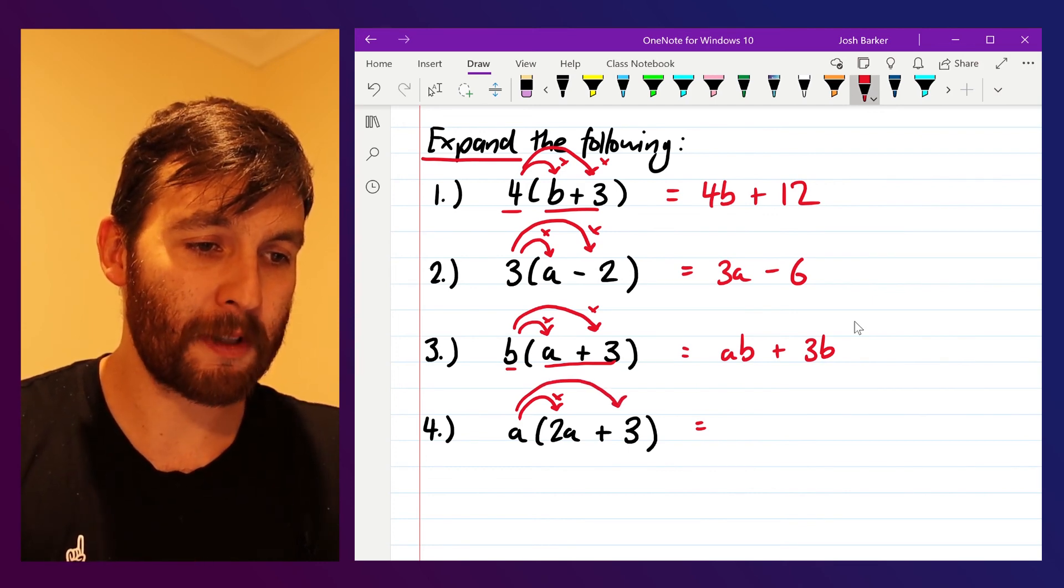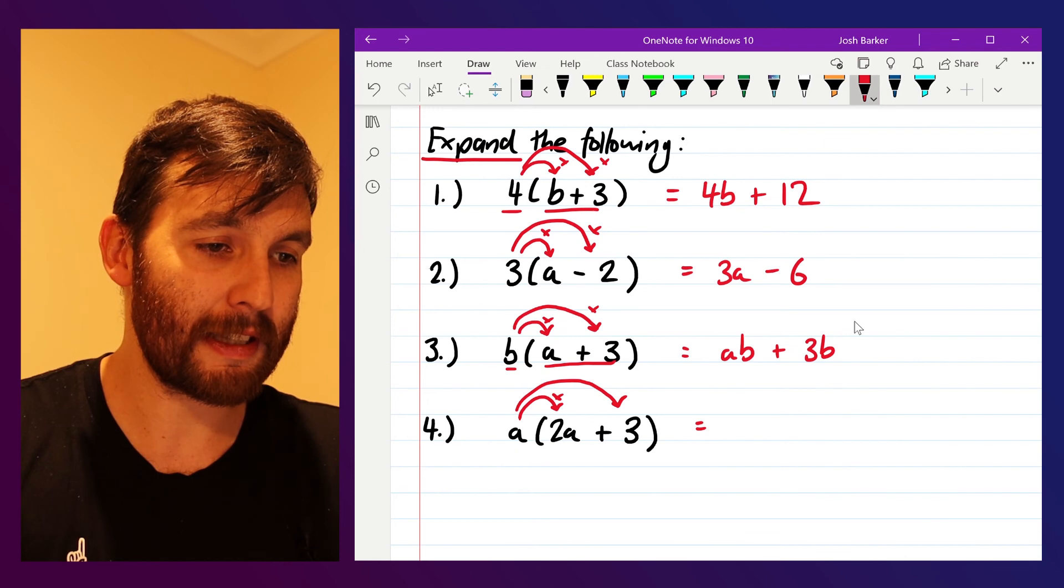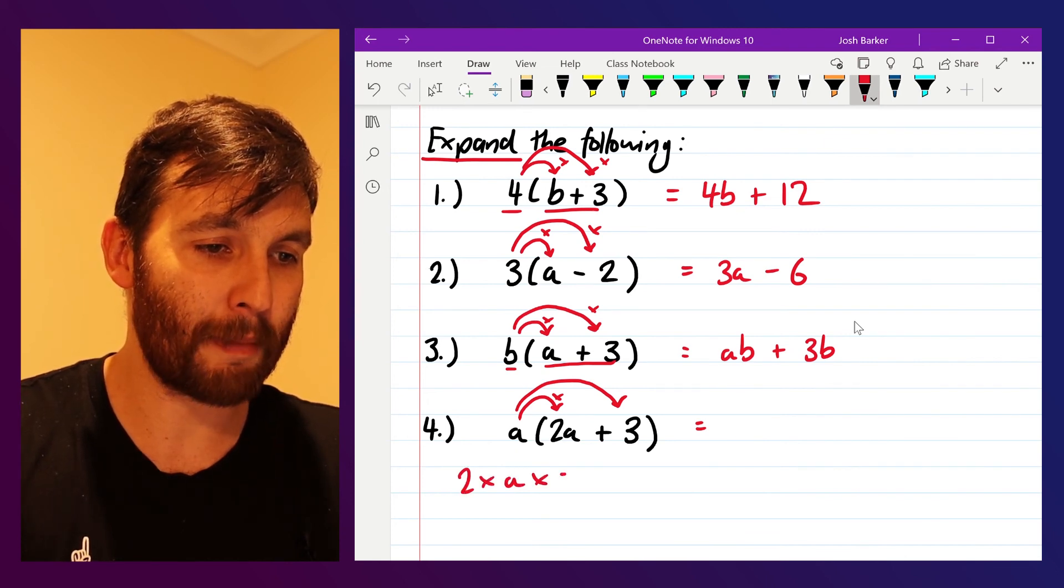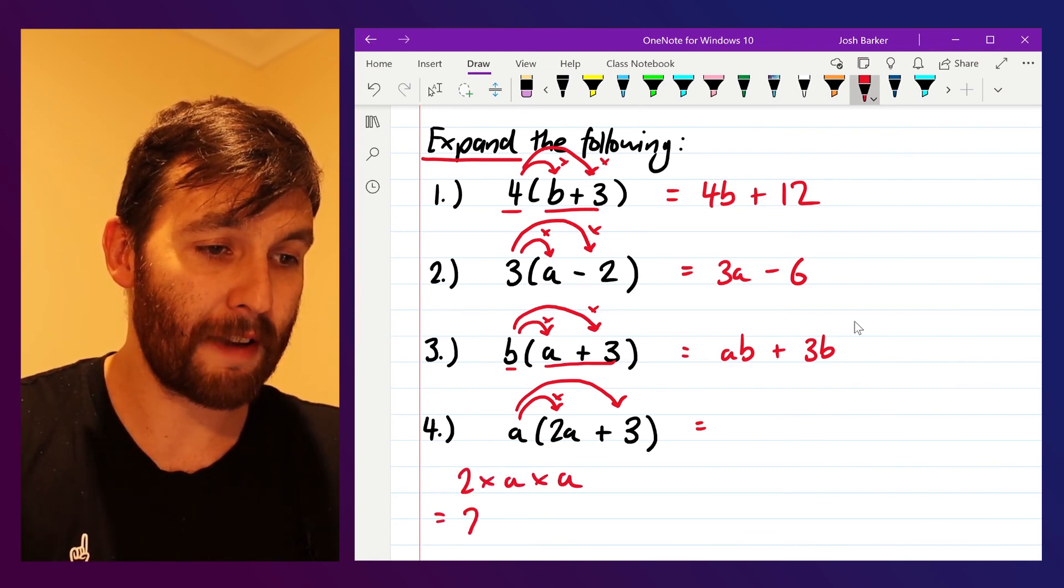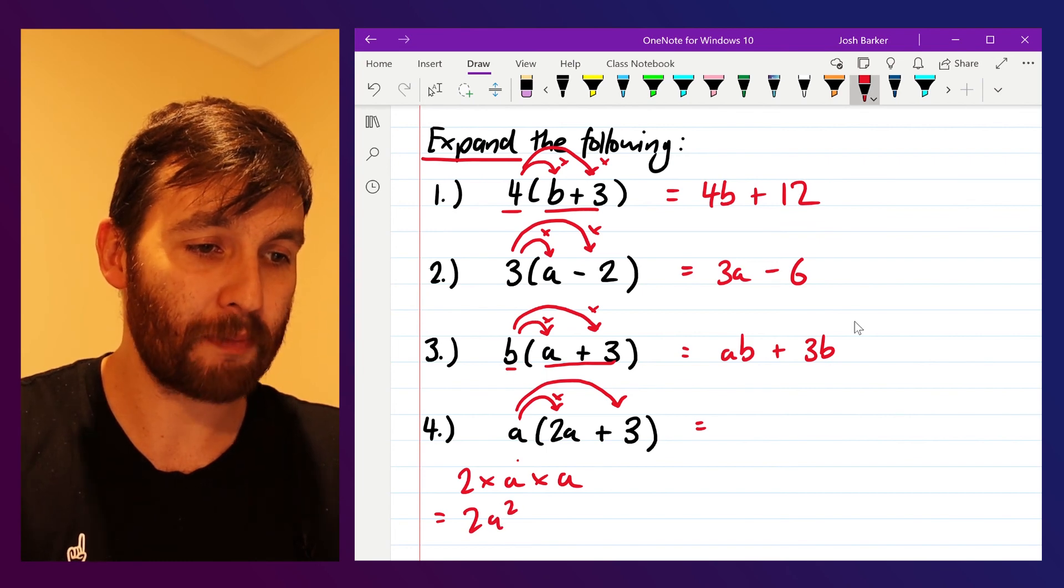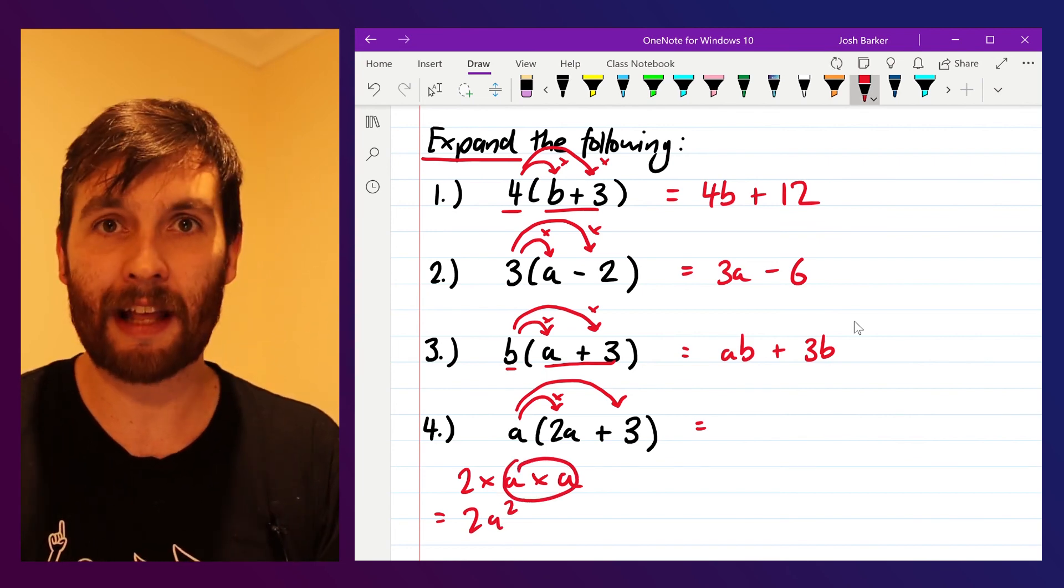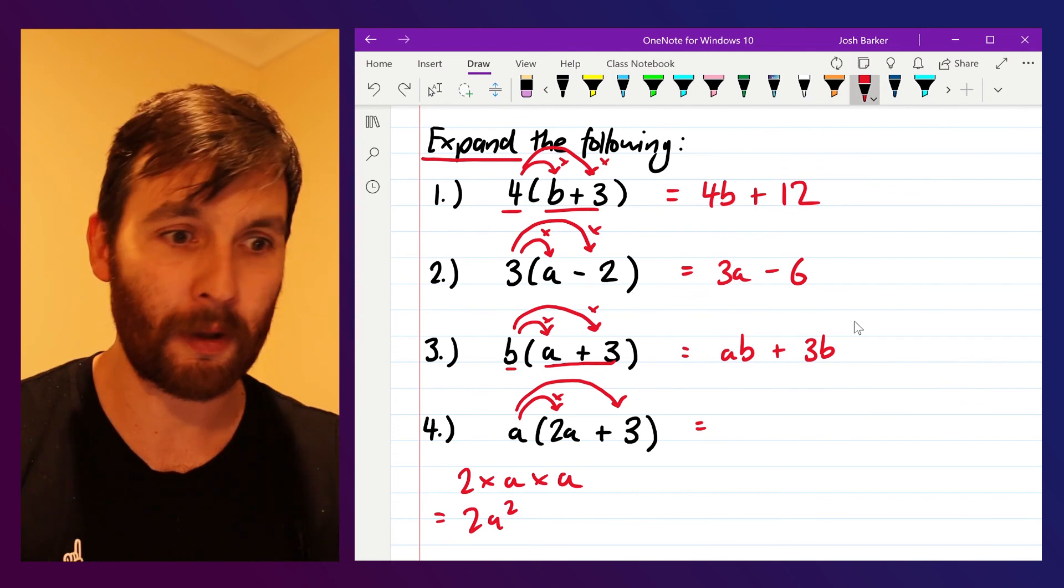Okay, a multiplied by two a, what we're essentially saying there is two multiplied by a multiplied by a, which gives us two a squared. So this a multiplied by a we write as two a squared instead; it means we've multiplied it by itself.